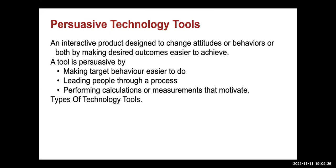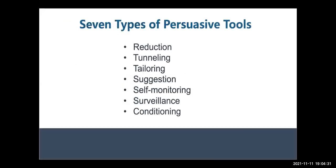There are a lot of types of tools. I want to give you a taxonomy from Fogg. There are seven types of persuasive tools: reduction, tunneling, tailoring, self-monitoring, suggestion, surveillance, and conditioning. These kind of range from the benign to the not-so-benign, because often when people see surveillance and conditioning, they go — what are we talking about here? Tailoring and suggesting sounds much nicer, and reduction makes things easier. But conditioning and surveillance — we'll get to that.